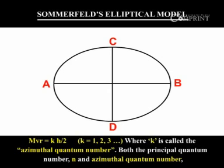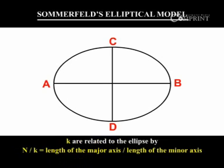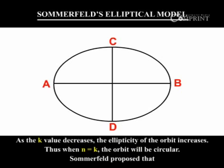Both the principal quantum number n and the azimuthal quantum number k are related to the ellipse by: n by k is equal to the length of the major axis divided by the length of the minor axis. As the k value decreases, the ellipticity of the orbit increases.